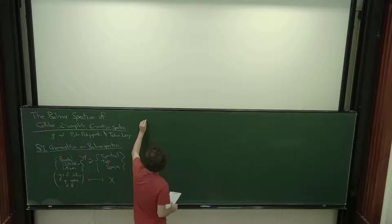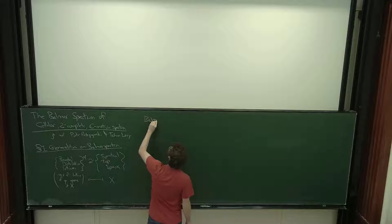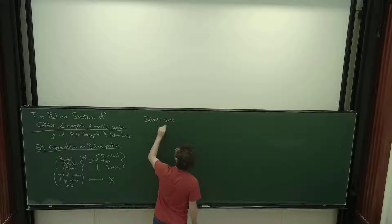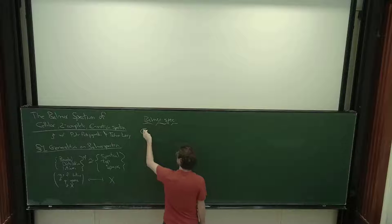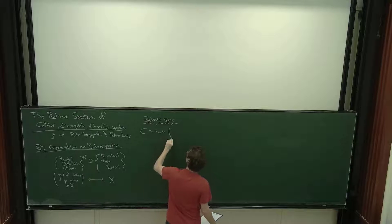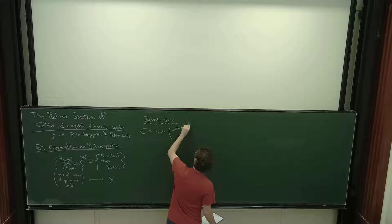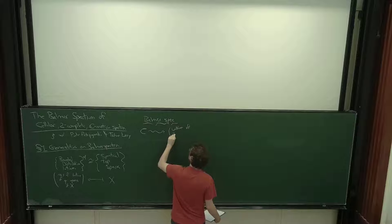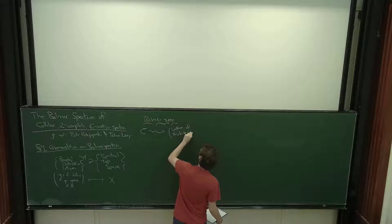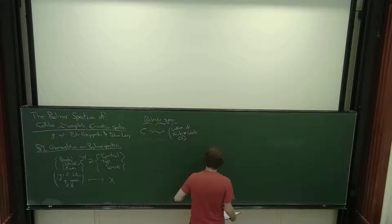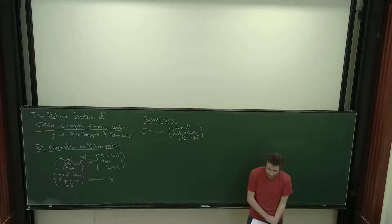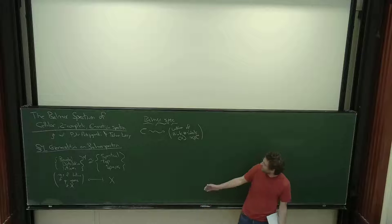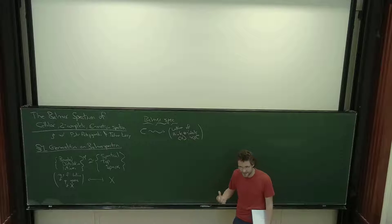One way you can get the Balmer spectrum is: take some symmetric monoidal category C generated by dualizable objects, and send it to the lattice of thick tensor ideals of the form generated by choices of objects in X. Working at the level of this lattice I find to be often much more concrete, because I get to just think about objects up to some equivalence relation.